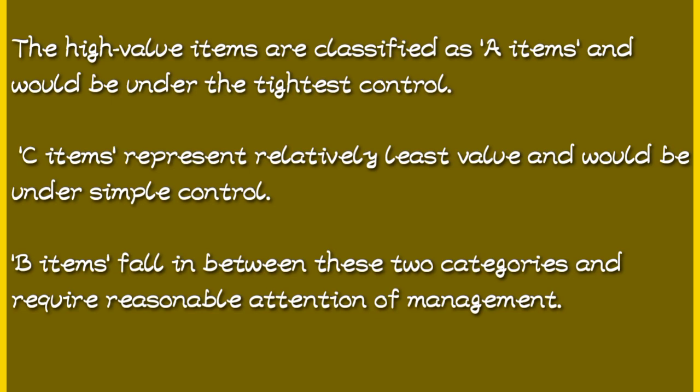C items represent the least value items that would be under simple control since they are not that important, though they are necessary. The B items fall in between A and C. They fall in between these two categories and require reasonable attention from management. The attention should be reasonable but not that tight like the ones for A items.